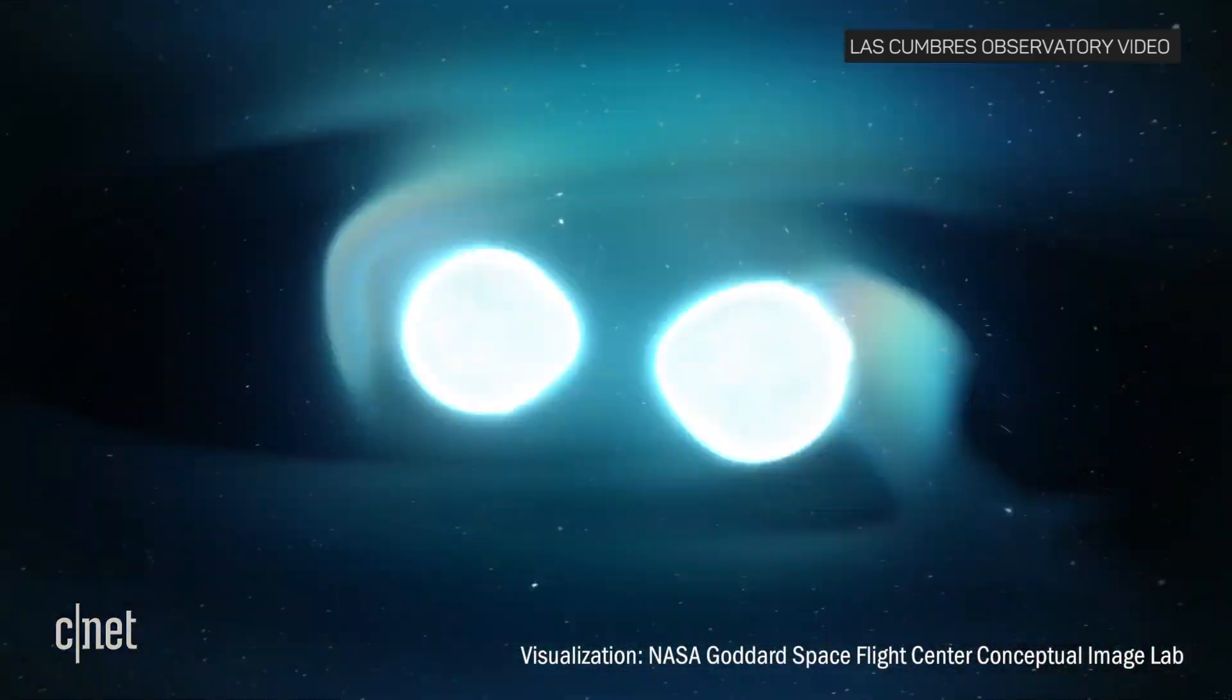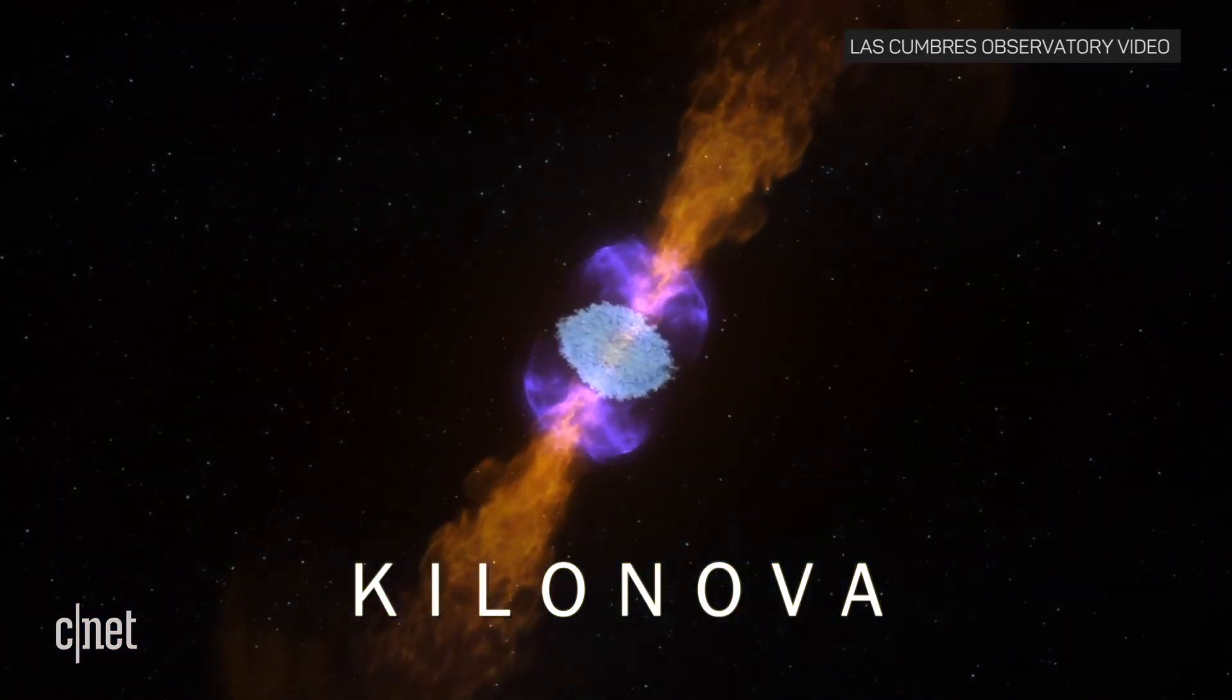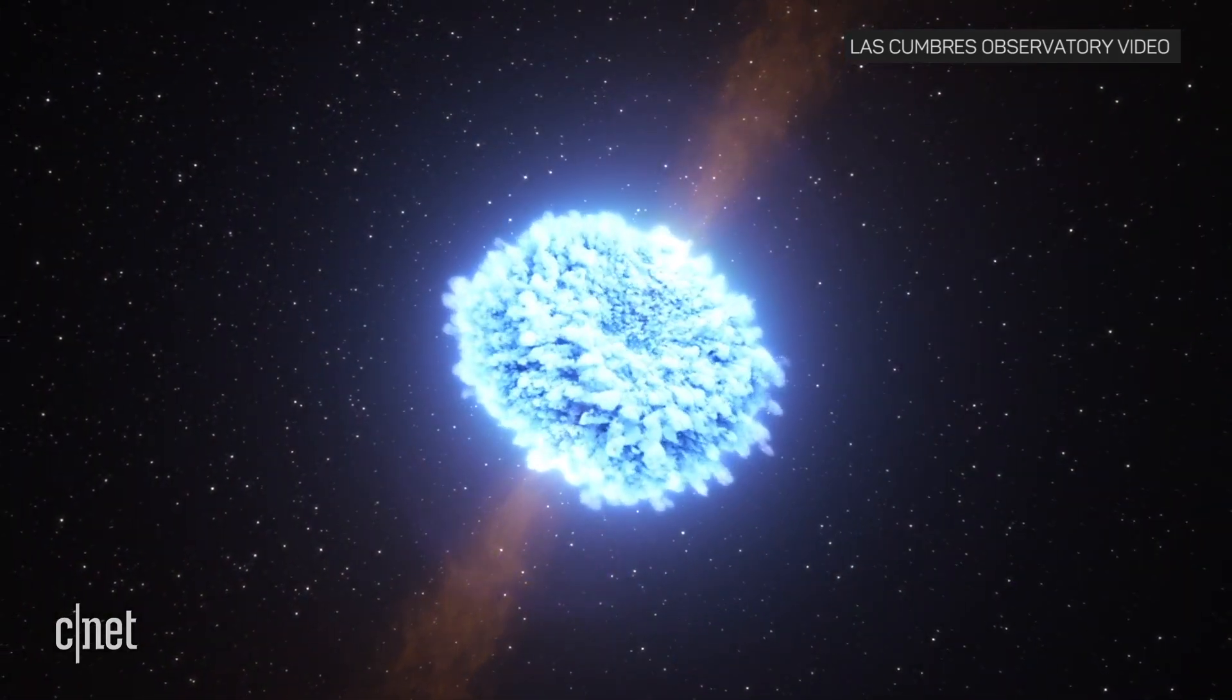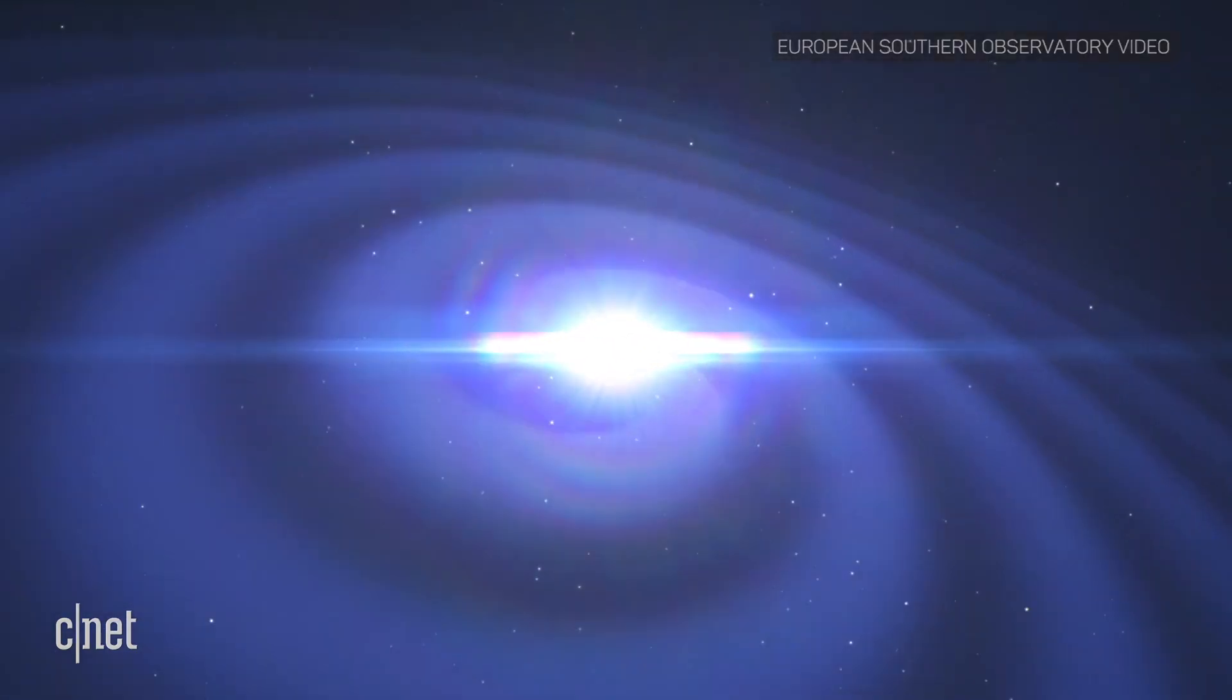Back in August, scientists observed an event known as a kilonova, which has long been theorized to occur when two neutron stars merge into one, producing a massive explosion that is believed to produce heavy metals like gold and platinum.